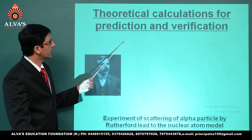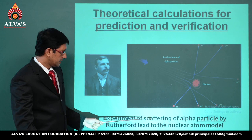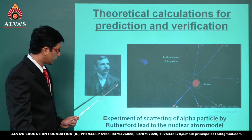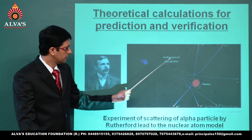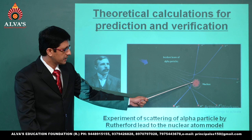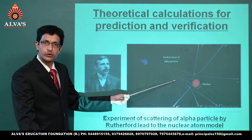Lastly, theoretical calculations for prediction and verification has an example in the experiment based on scattering of alpha particles by Rutherford, which led to the nuclear atom model. A target nucleus was used, and when an incident beam of alpha particles came in its way, some of them had deviations in their respective directions. We will learn all these situations in detail across various topics.